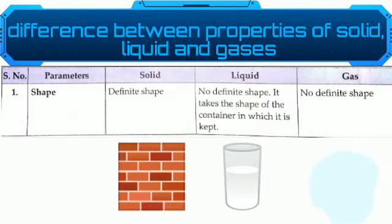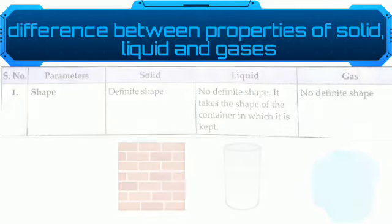Shape: Solid has definite shape. Liquid has no definite shape. It takes the shape of the container in which it is kept. Gas has no definite shape.